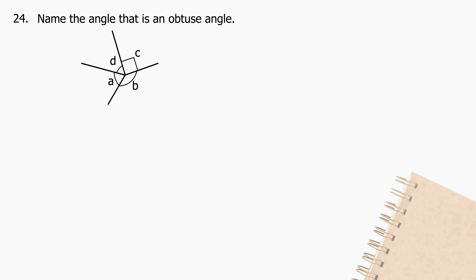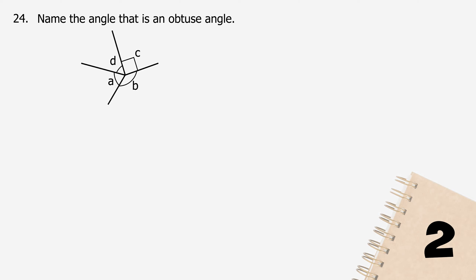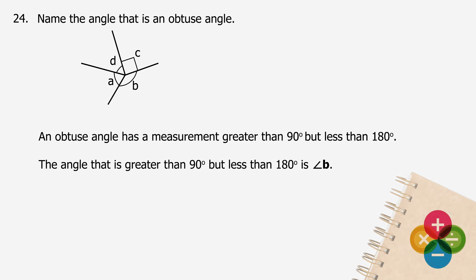Question 24: Name the angle that is an obtuse angle. An obtuse angle has a measurement greater than 90 degrees but less than 180 degrees. The obtuse angle will be angle B.